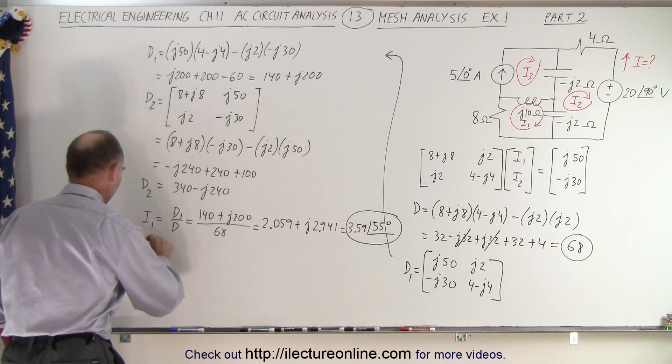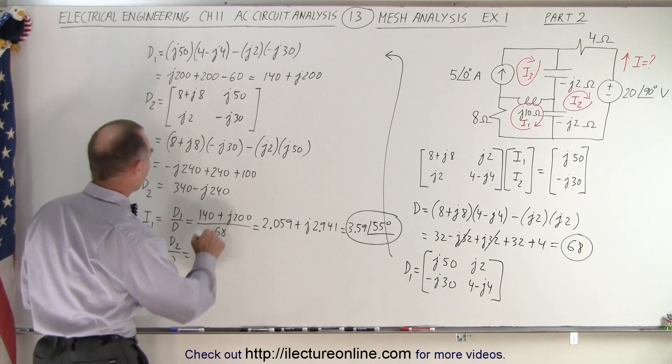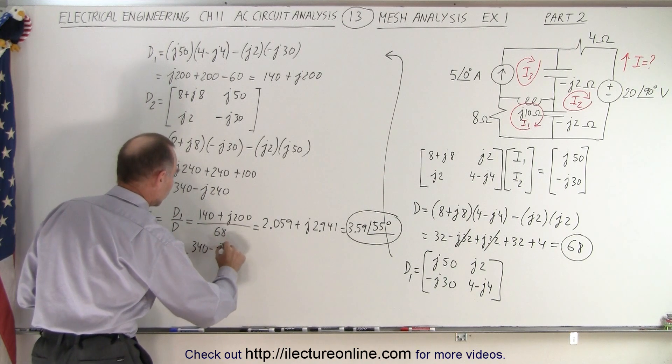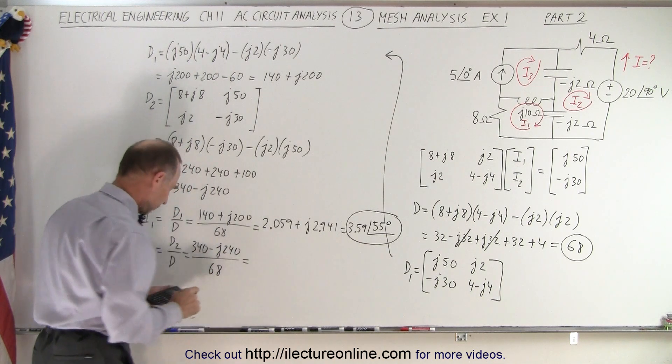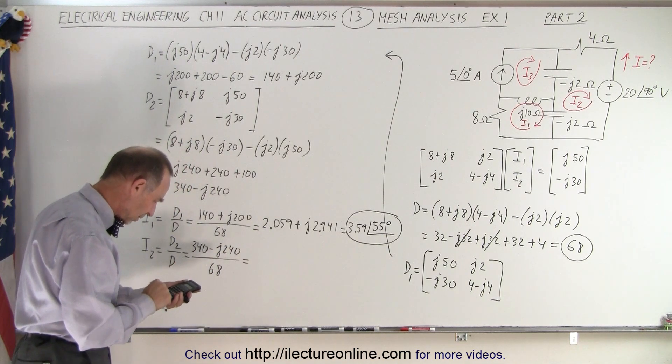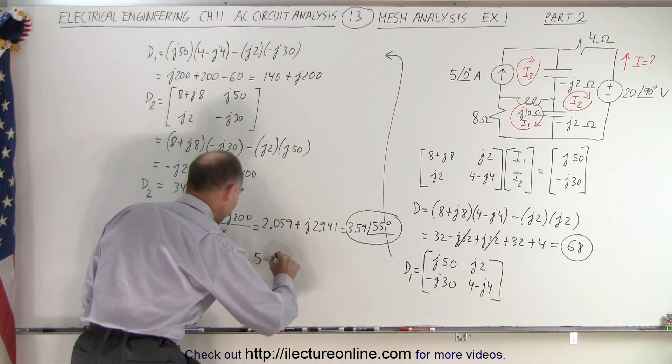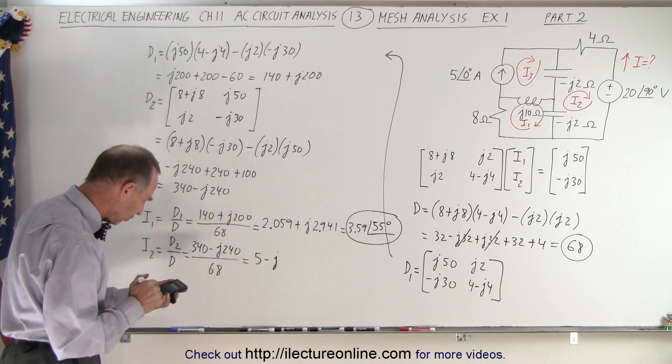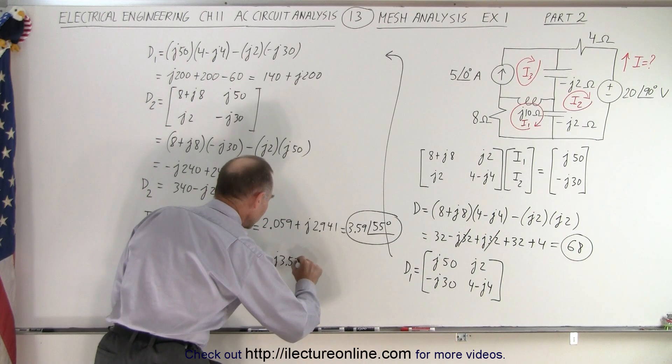So now let's go for I2. That would be D2 divided by D, and D2 in this case, what's right here, that would be 340 minus J240 divided by D, the determinant which is 68. So we end up at 340 divided by 68, which is exactly 5, minus J240 divided by 68, which is 3.529, 3.529.